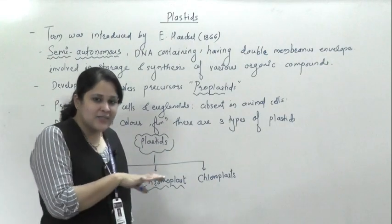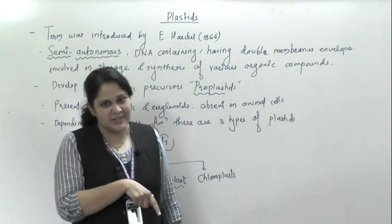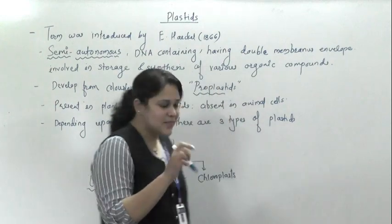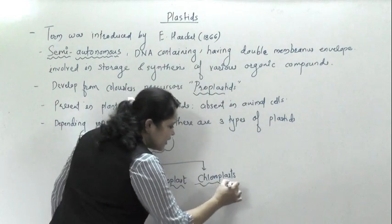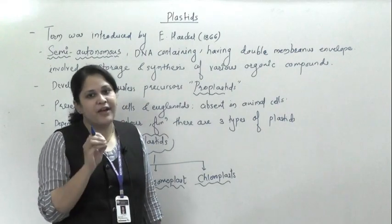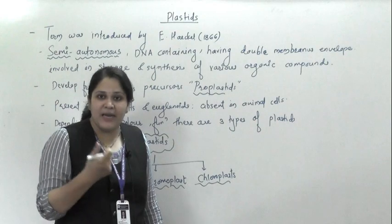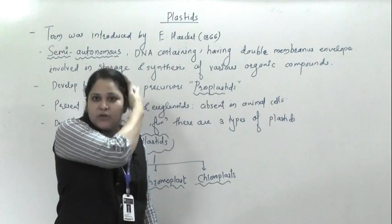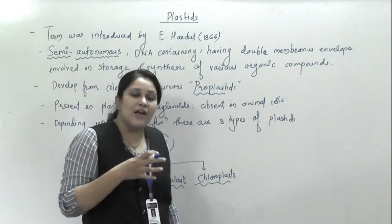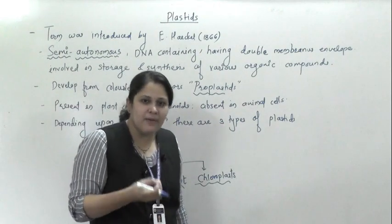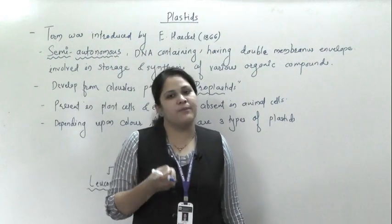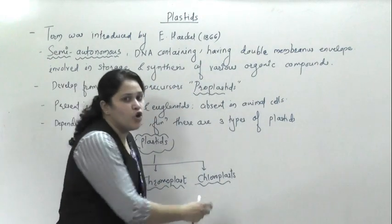Just understand the difference between chromoplast and chloroplast. Chloroplasts are green plastids, filled with photosynthetic pigments like chlorophyll A, chlorophyll B, carotenoids, and xanthophyll. These are your common photosynthetic pigments. So chloroplasts are filled with photosynthetic pigments and therefore appear green in color. All parts of plants which appear green in color consist of chloroplasts. Some parts of plants are orange, red, or yellow — this coloration is because at the time of ripening, chloroplasts get transformed into chromoplasts, which are the colored plastids.